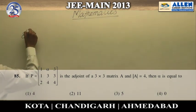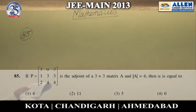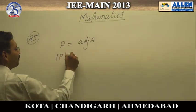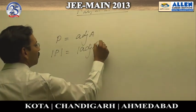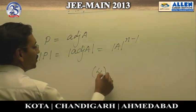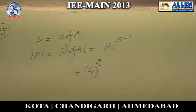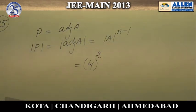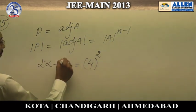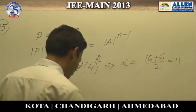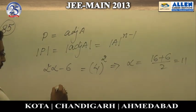Question number 85. P is a matrix and it is the adjoint of matrix A, so P can be written as adjoint of A. Therefore, the determinant of P equals determinant of adjoint A, which equals determinant of A raised to the power n minus 1. The determinant of A is given as 4 and n is 3, so it is 4 squared equals 16. The value of determinant P comes to be 2 alpha minus 6, giving us alpha equals (16 plus 6) divided by 2, which is 11. So the correct option is 2 and the answer is 2.